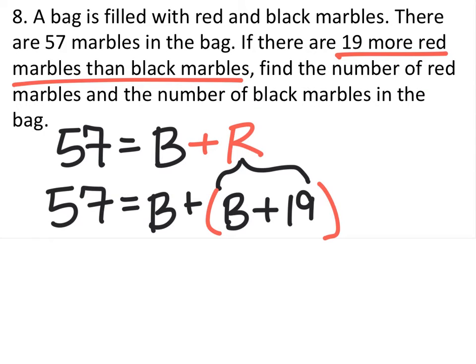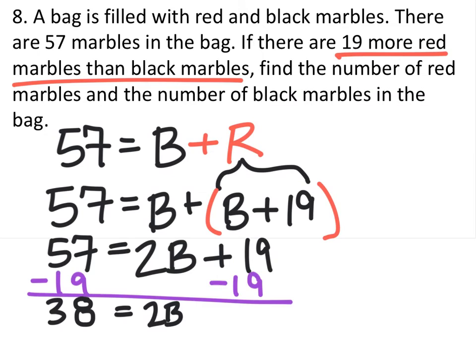Well, this gives us an equation using only one variable, which we can find. So if we combine the Bs, the blacks, we would have 2B plus 19 equals 57. We'll subtract 19 from both sides.